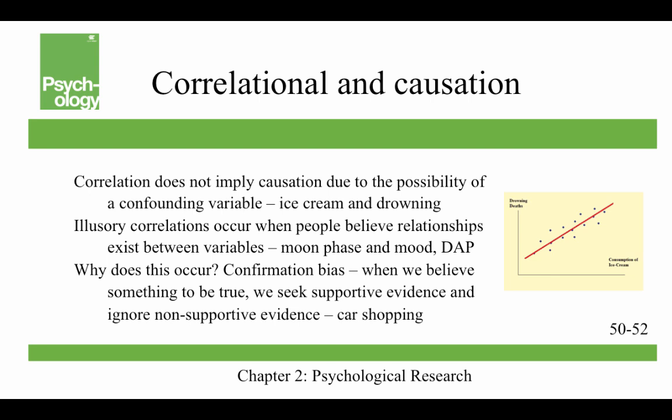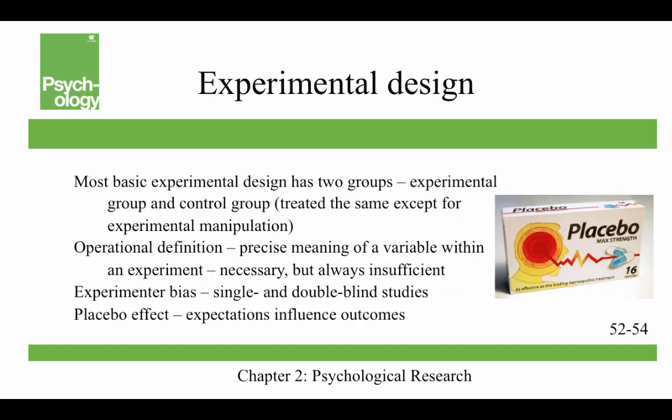Why does illusory correlation occur? One answer is confirmation bias — when we believe something to be true, we seek supportive evidence and ignore non-supportive evidence. For example, research shows that in automotive shopping, people do research after they buy a car to confirm they made a good choice, when obviously you should do the research before you go shopping.